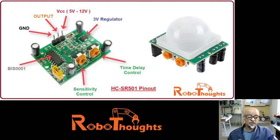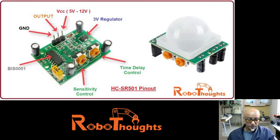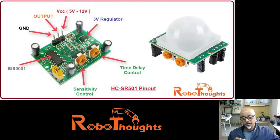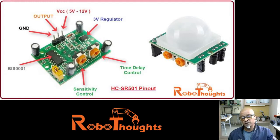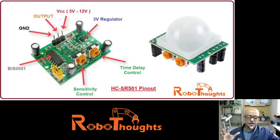The applications of the PIR sensor include security systems, robotics, automation, and IoT projects. Such sensors work really well for detecting the entrance of any object, including a human being, within a given area. The detection range of a PIR sensor is between 5 meters and 12 meters — 12 meters being the maximum detection distance.